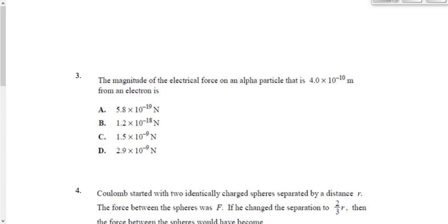Next one. The magnitude of the electric force on an alpha particle that's this far away is whichever value. F is equal to KQ1Q2 over R squared. We just multiply them together and we do our thing, right? And we end up getting, I want to say it was D, wasn't it? D, 2.9 times 10 to the negative 9 newtons.